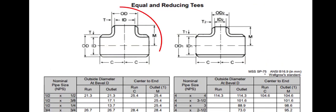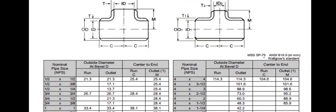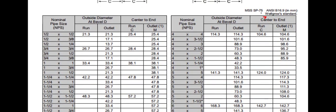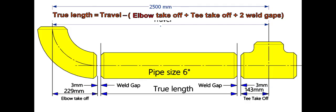Let us check the takeoff length of the tee in the chart. In the equal tee section, check the dimension of six inches and in column C. 142.7, let us take it as 143 millimeters.